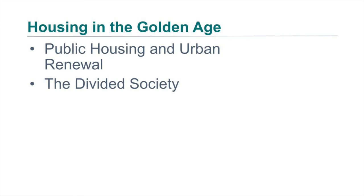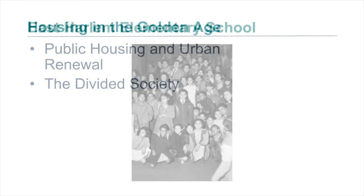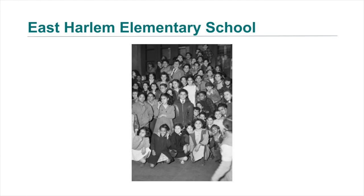Suburban whites feared that any non-white presence would lower their quality of life and property values, so residential segregation was reinforced by a tactic called blockbusting — where real estate brokers circulated exaggerated warnings of an influx of non-whites to persuade white residents to sell their homes quickly. Suburban home ownership remained a white entitlement, with racial barriers in housing reinforcing inequalities in public education and jobs. Here we have a picture of students at an East Harlem elementary school in 1947 — most are recent immigrants from Puerto Rico, though some are probably from the area's older Italian-American community.